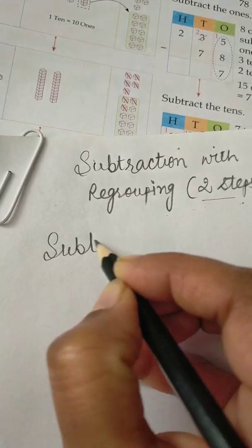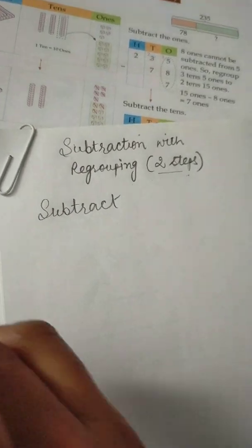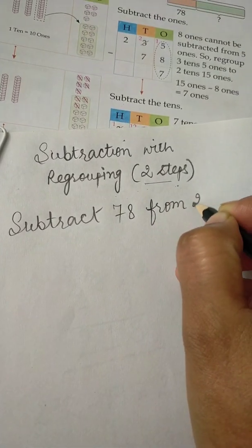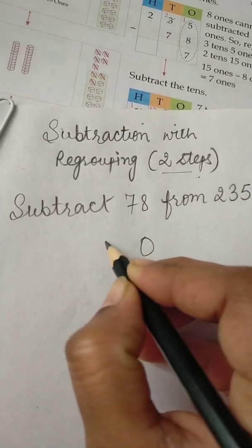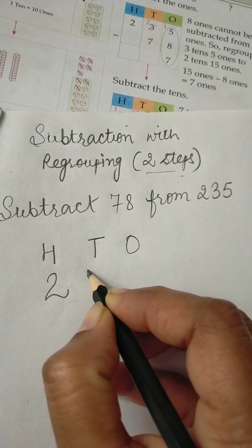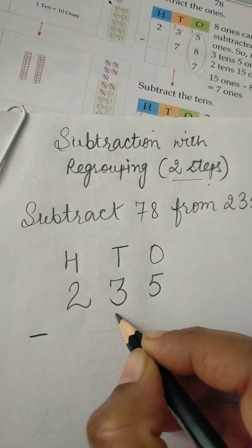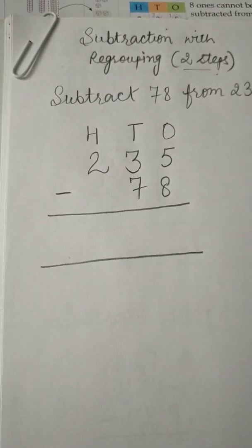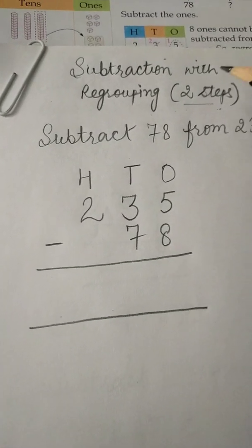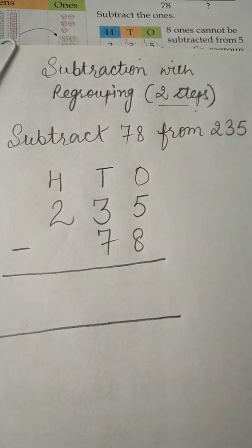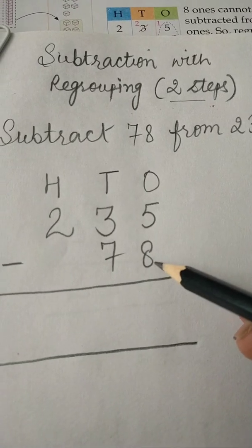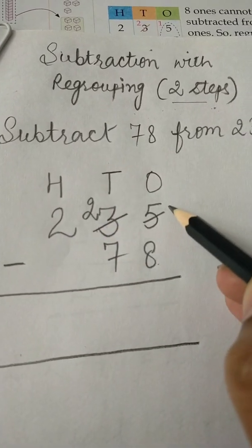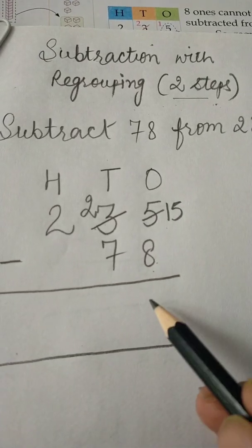For example, we have to subtract 78 from 235. Ones, tens, hundreds — 235 minus 78. Here when we need to take the borrow two times, that is called subtraction with regrouping two steps. See how: firstly, 5 minus 8 is not possible, so we will move to the next step. Here we will take one borrow — here will be left 2 and it will become 15.